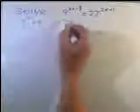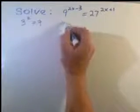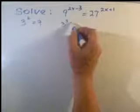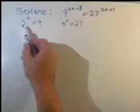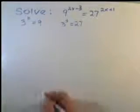It's going to be 3 to the second equals 9 and 3 to the third equals 27. So we can bring both of these bases to base 3 and rewrite this equation as following.